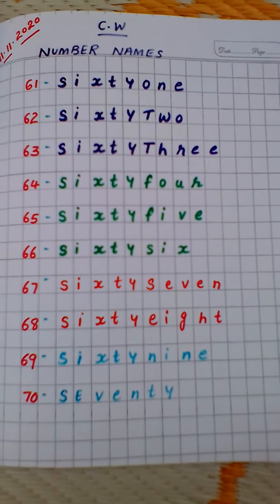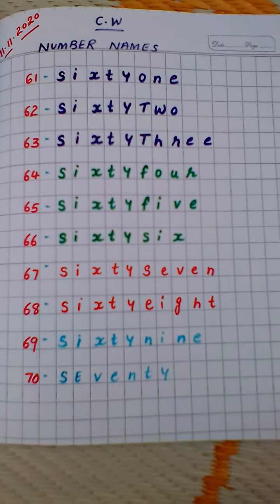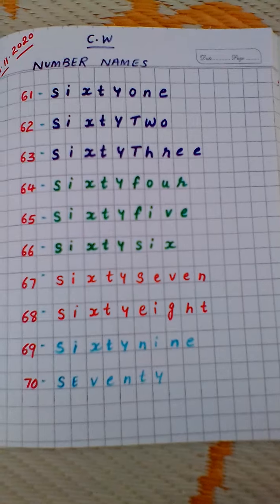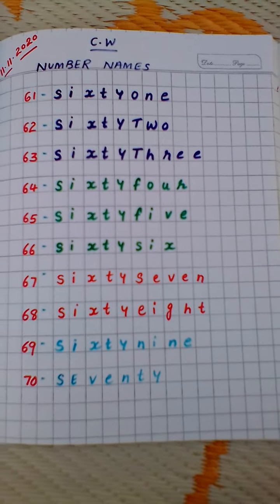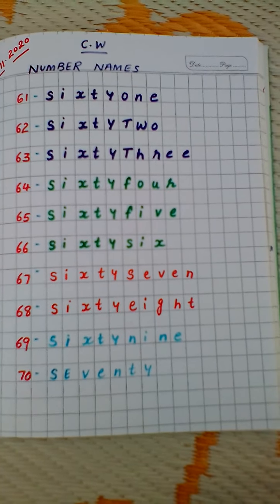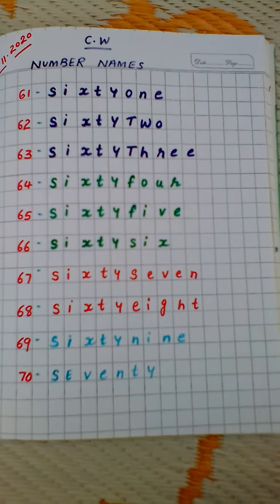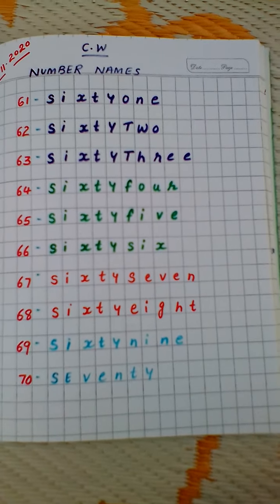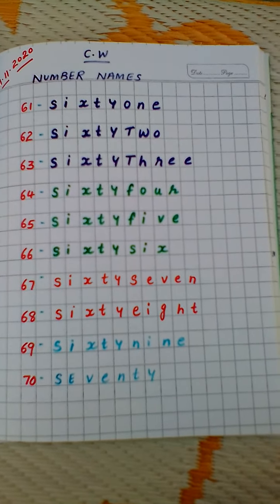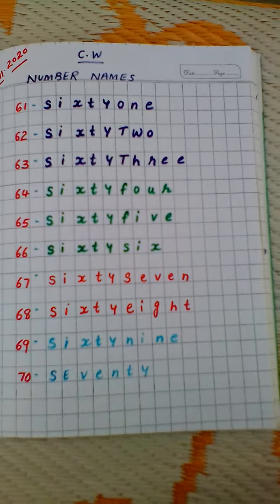So dear children, today we have learned number names 61 to 70. Please write in your fair copy very neatly the number names and learn the spelling. Okay children, bye. Have a nice day.